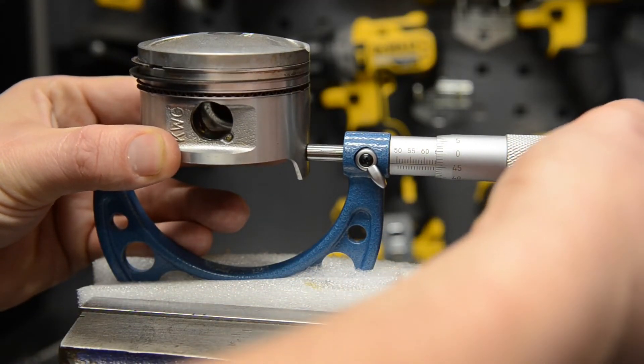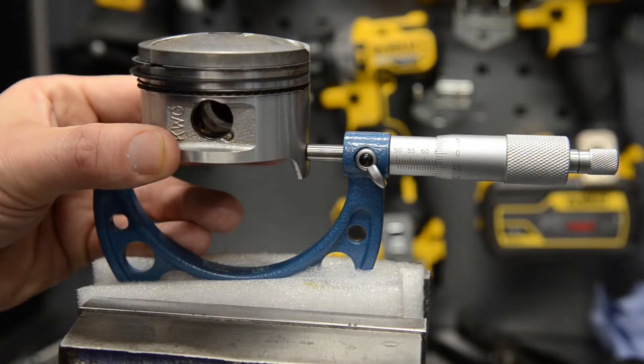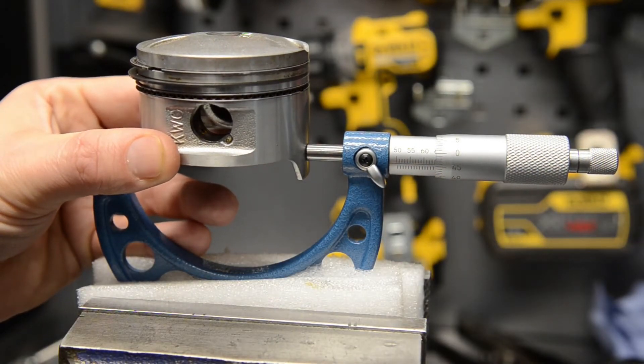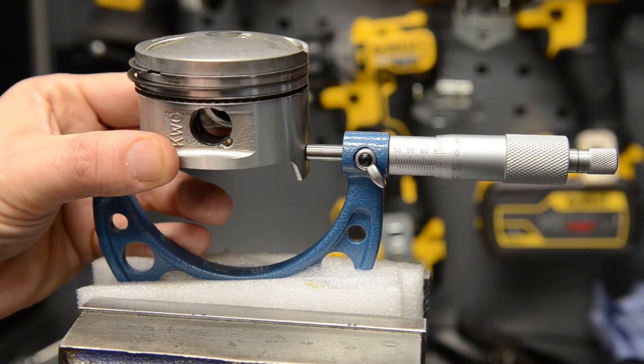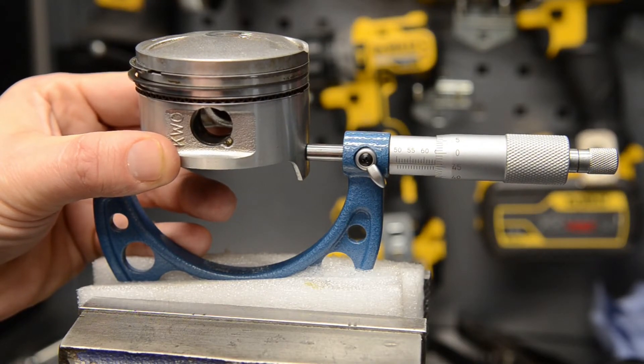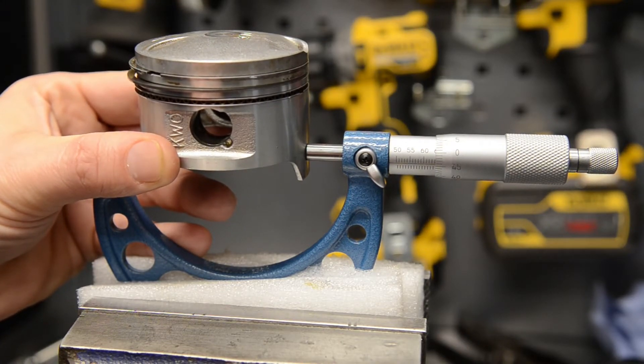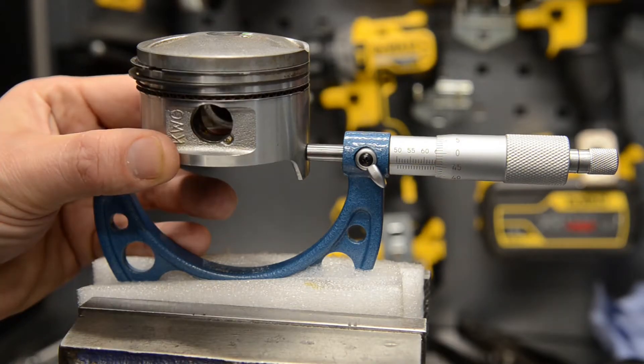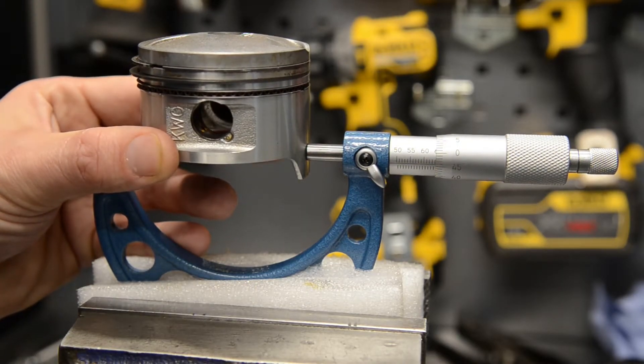Okay, so my measurement is 63 and a half plus 46, which is 63.96. That's my measurement on this piston. That's good—that's within the service limit.